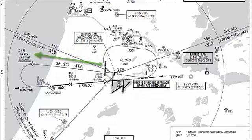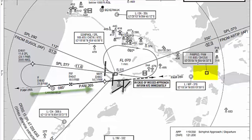We continue until we reach 11.6 DME from SPL, that is Skibole VOR. After reaching 11.6 DME, we will do a standard rate turn towards 085 inbound course to Pampas VOR. This is our final approach course. We will maintain 2000 altitude while making a standard rate turn towards our intermediate fix, that is 21.9 DME from Pampas VOR.